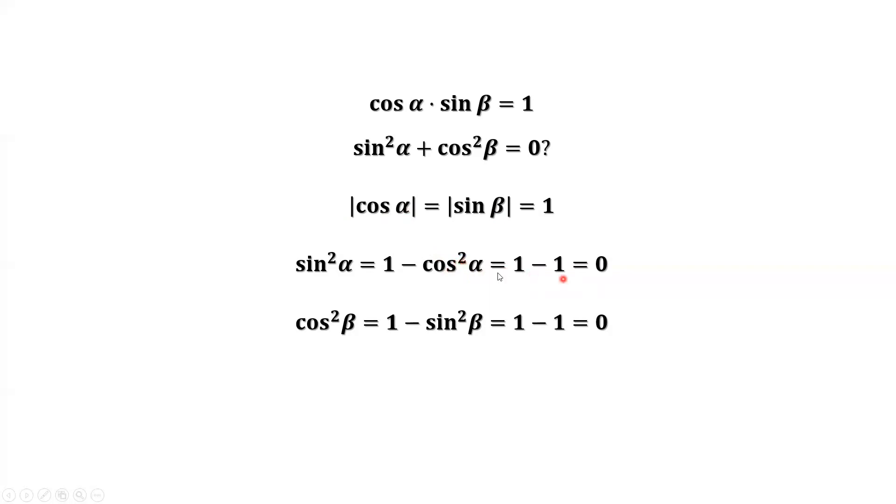so square is also one. Sine squared alpha equals one minus one, which is zero. Similarly, cosine squared beta equals one minus sine squared beta equals one minus one from this result.